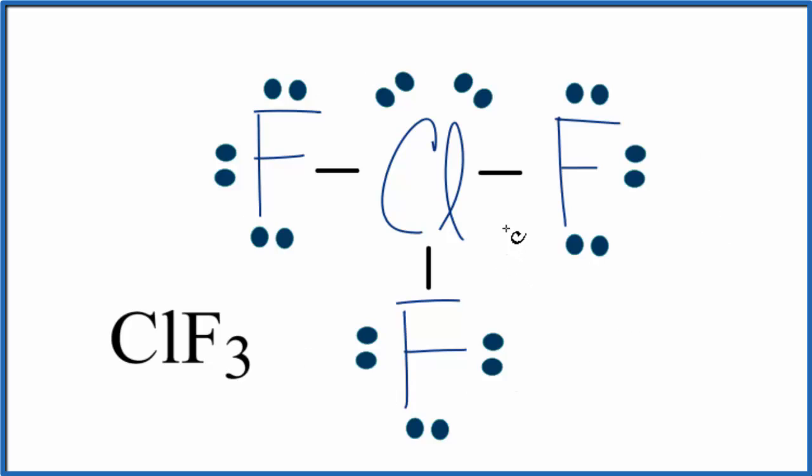Here's the Lewis structure for ClF3, and you will notice that chlorine has 2, 4, 6, 8, 10 electrons around it, but that's okay, it can have an expanded octet.